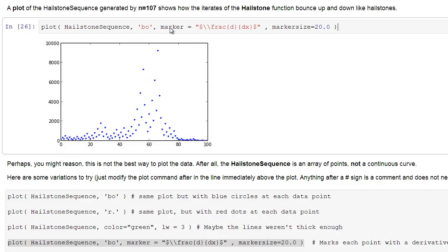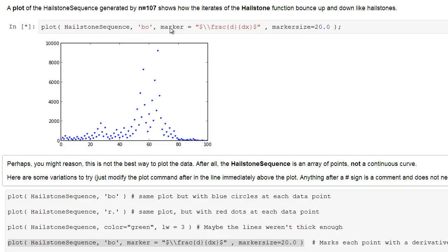and we're going to hit shift-enter. And now we have the Hailstone sequence with the derivative operator shown at each of the values.